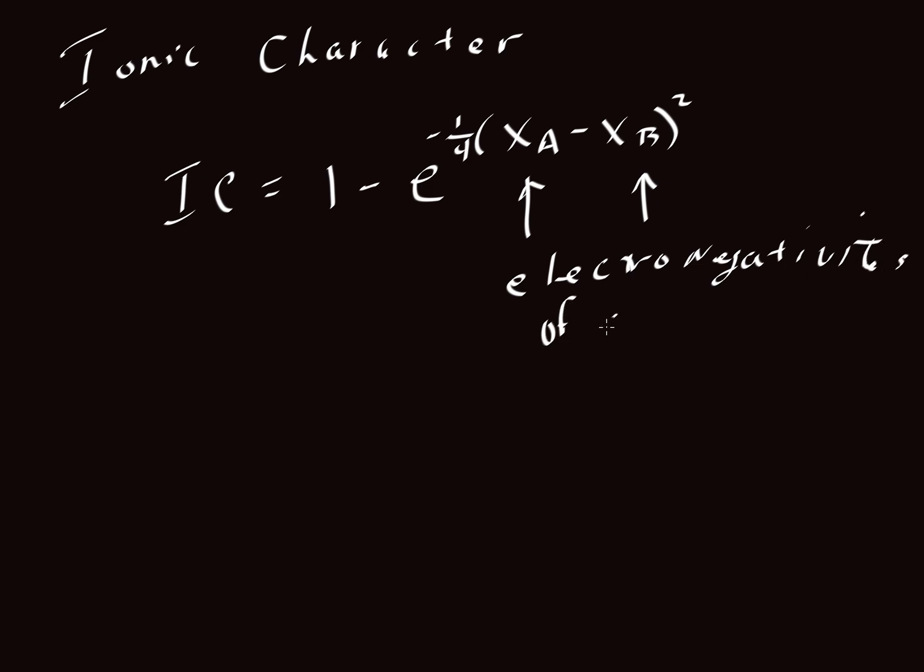Electronegativities of atoms A and B that are being bonded together. We take their electronegativities, look at their difference, square that difference, multiply by minus one-fourth, take that whole amount, raise e to that power, and then 1 minus that is the ionic character. Let's do a couple of examples.